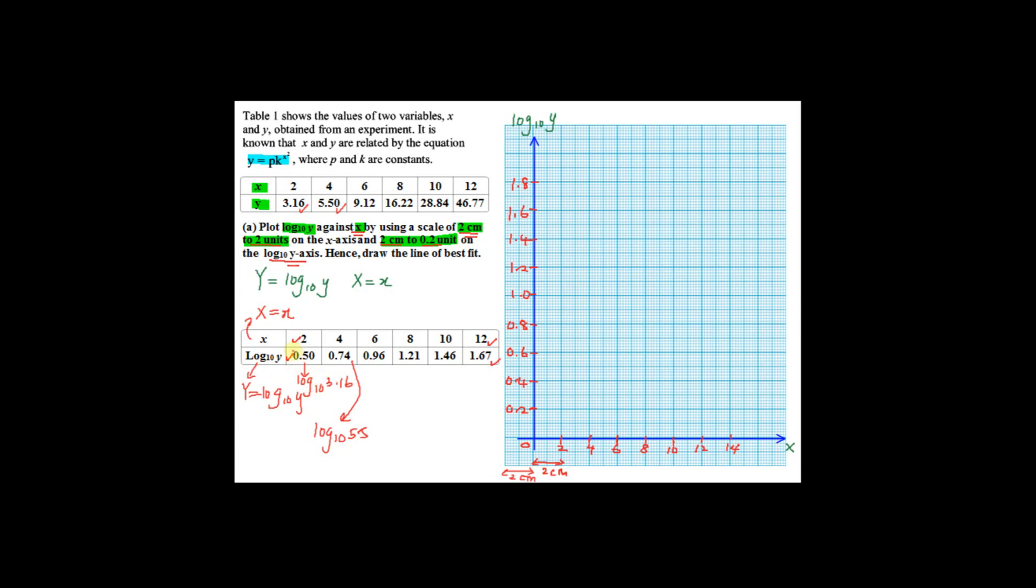Now you have to start plotting the points here. The first point you're supposed to draw is 2, 0.5. So where is 2, 0.5? 2 here, 0.5. So this is the first point.